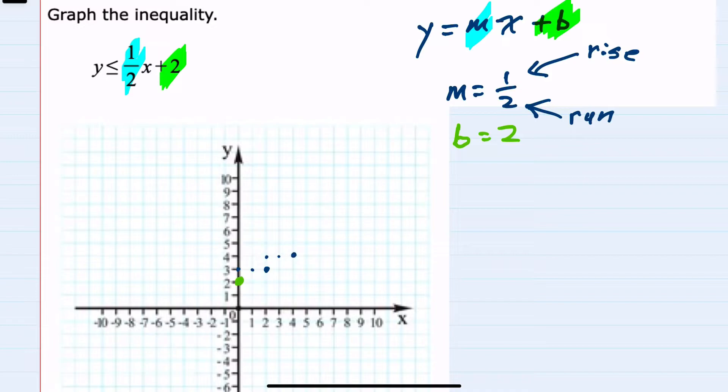Now before drawing the line, I'm going to look back at the inequality sign. Since it is less than or equal to, I know it's going to be a solid line. Had it just been less than, I would have drawn a dotted line. But less than or equal to, I'll draw a solid line.